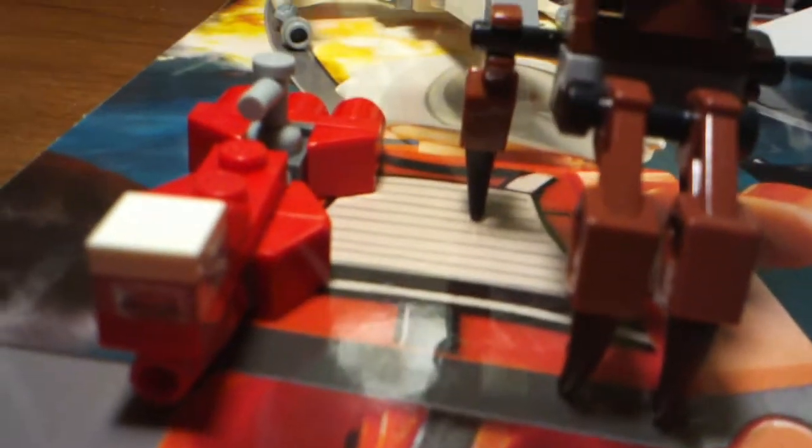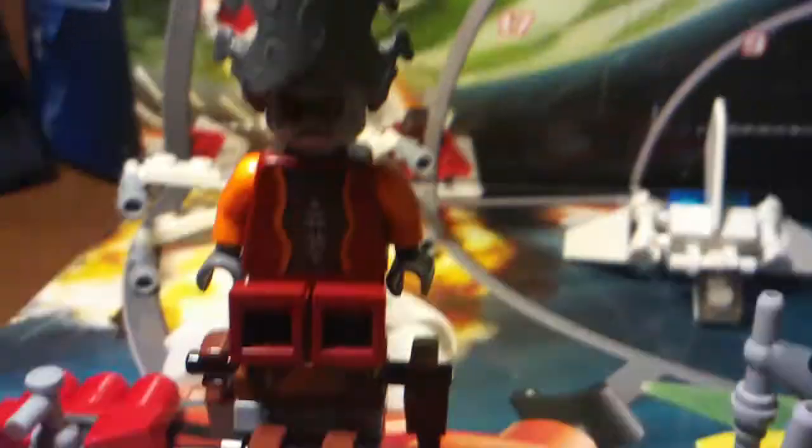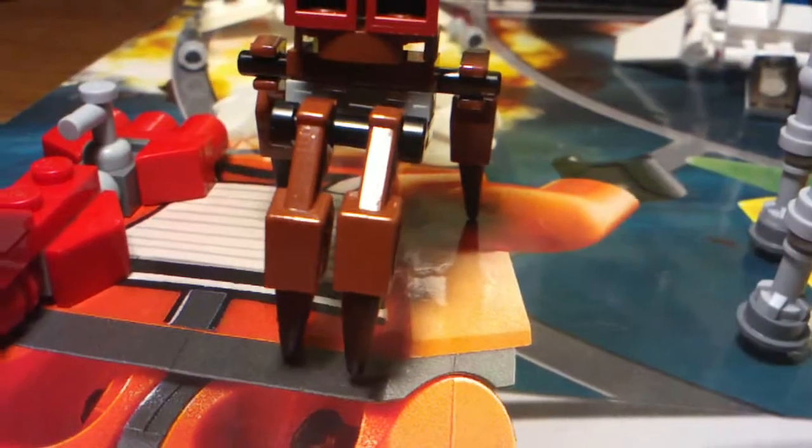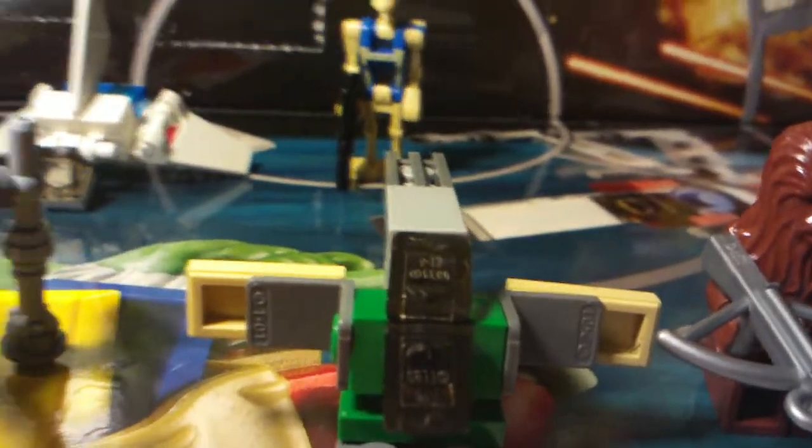Day 1 was the Republic Cruiser. Day 2 was Newt Gunray and his Walker thing we got on day 3. Day 4 was the Spider Walker. Day 5 was Boba Fett's Slave 1.